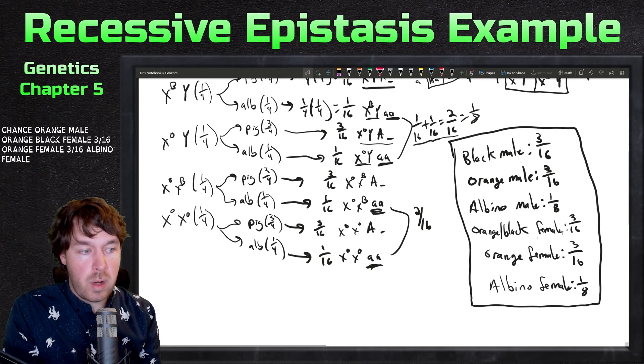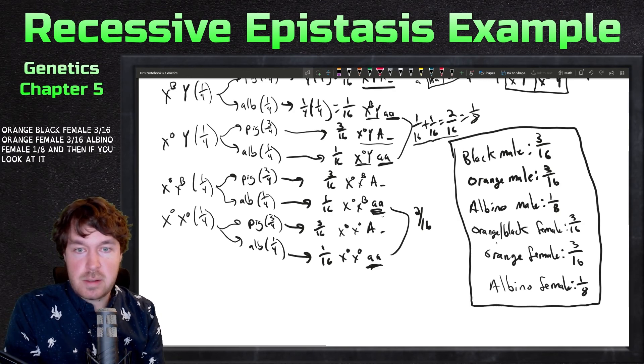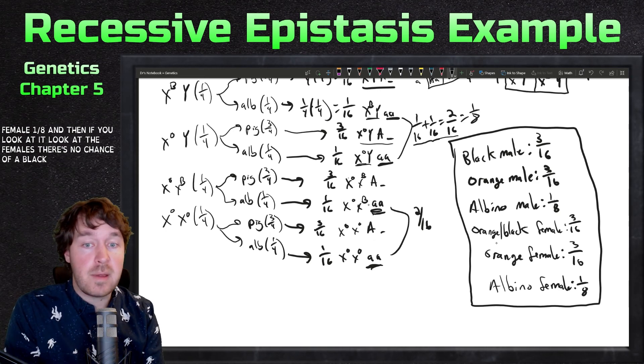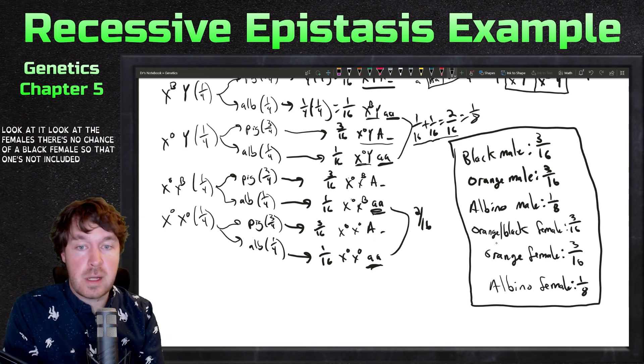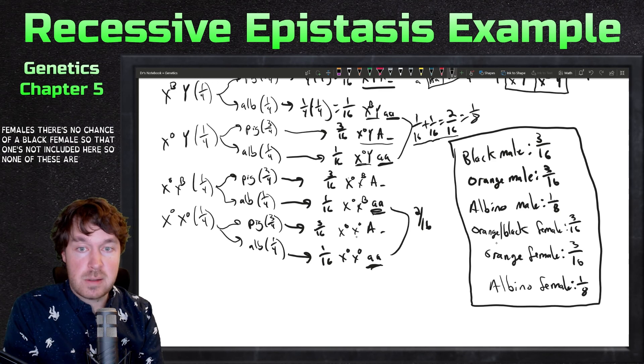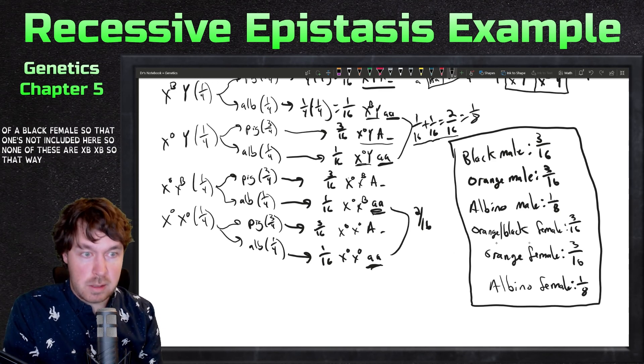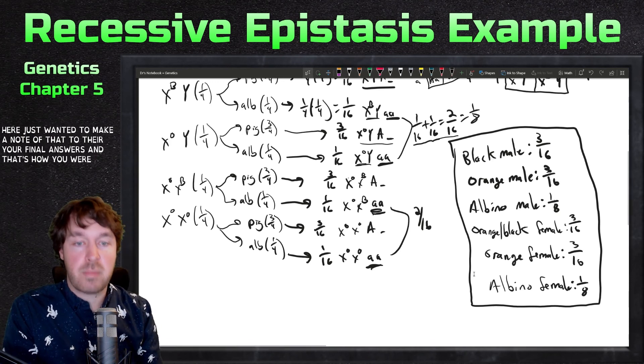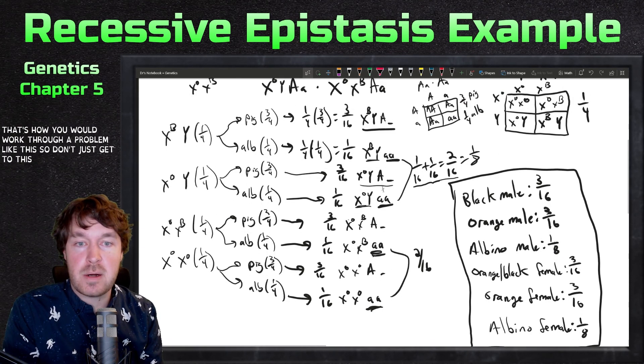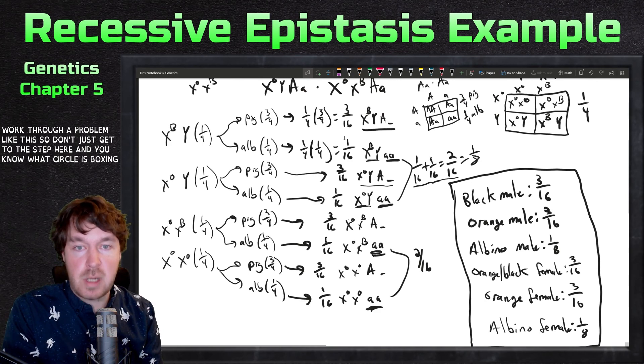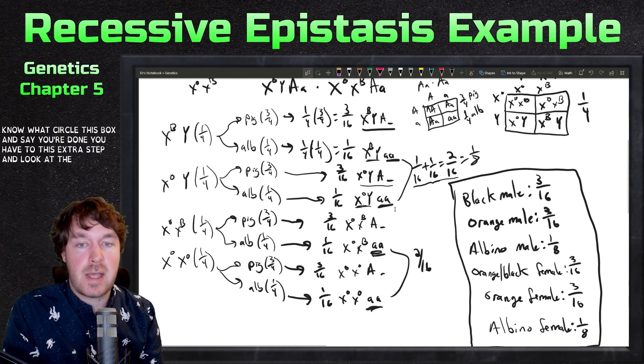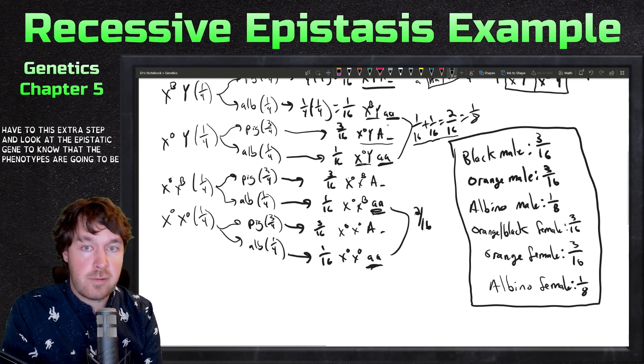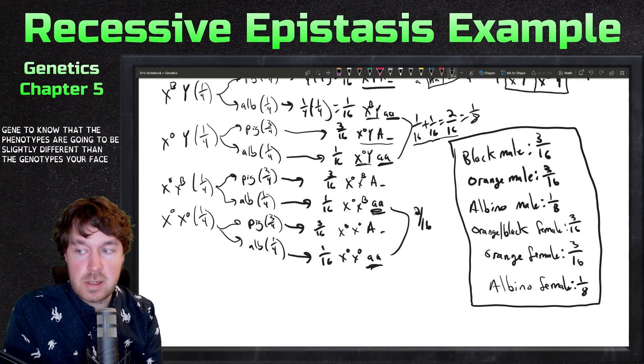Three-sixteenths chance orange male, orange-black female three-sixteenths, orange female three-sixteenths, albino female one-eighth. If we look at the females, there's no chance of a black female, so that one's not included here. None of these are X^B X^B, so that one's not included. There are your final answers. That's how you would work through a problem like this. Don't just get to this step and circle this box and say you're done. You have to do this extra step and look at the epistatic gene to know that the phenotypes are going to be slightly different than the genotypes based on this masking phenomena.